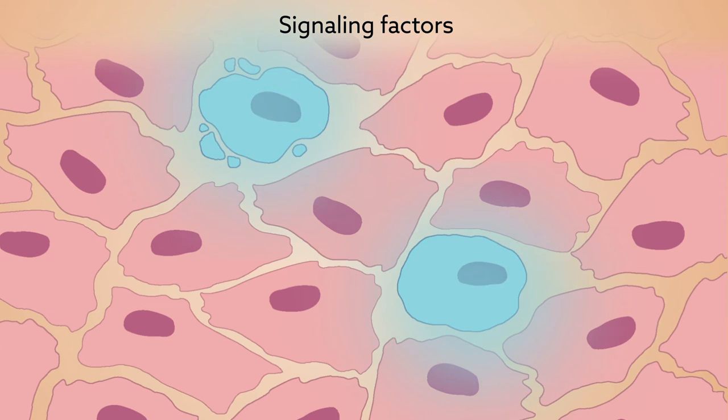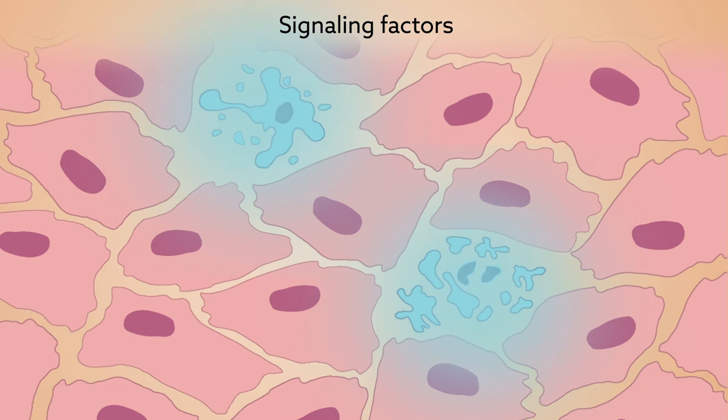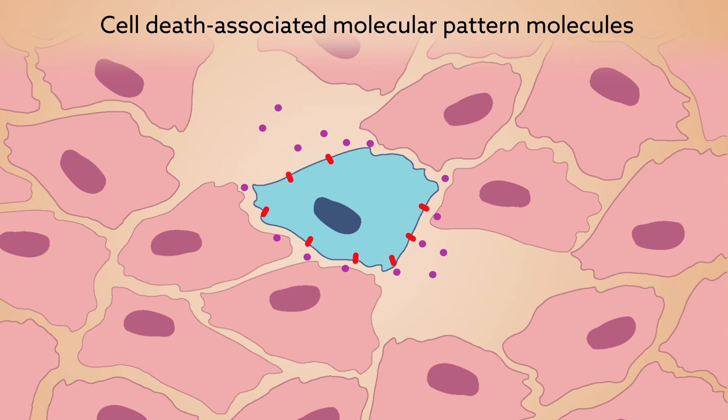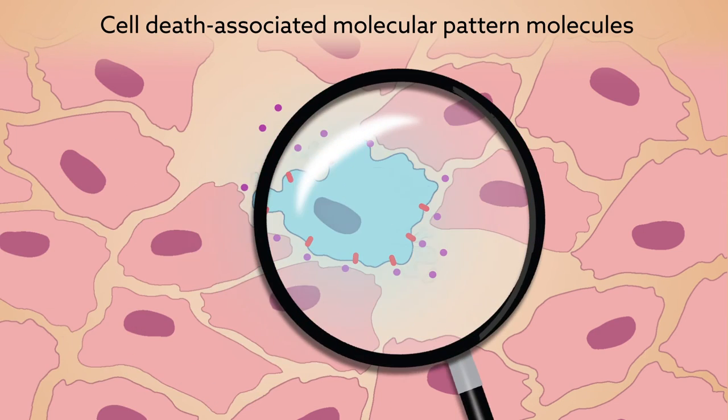Signaling factors are one of the most critical determinants of how surrounding cells and tissues respond to dead and dying cells. Damaged cells influence how their death will affect their surrounding environment by expressing or releasing what are known as cell death-associated molecular pattern molecules, or CDAMPs.